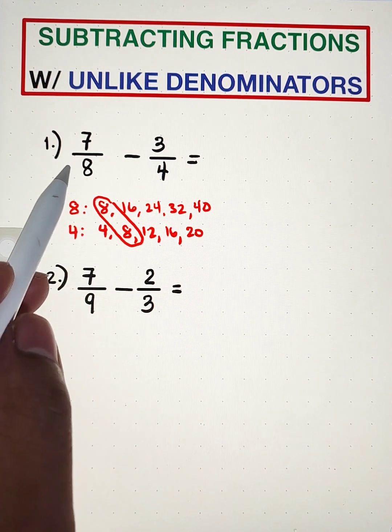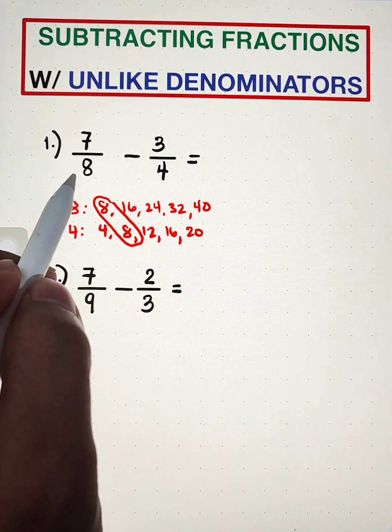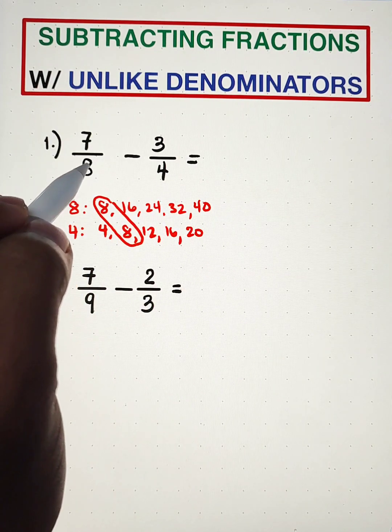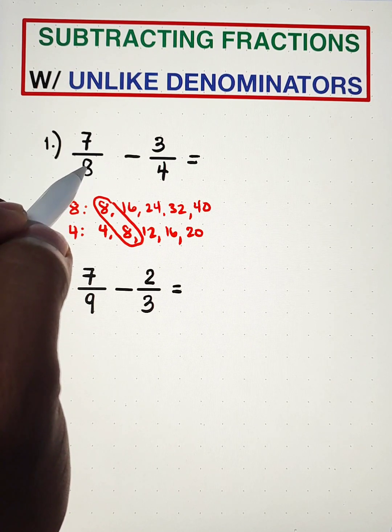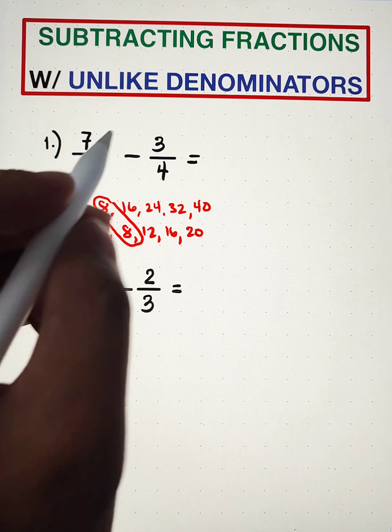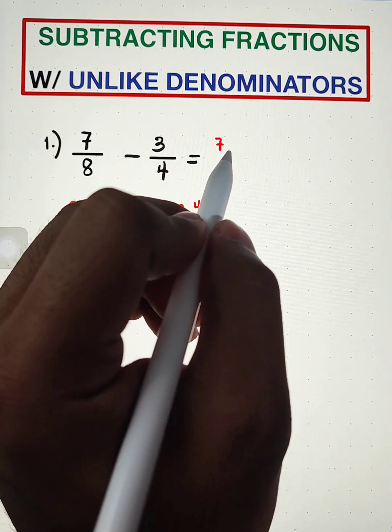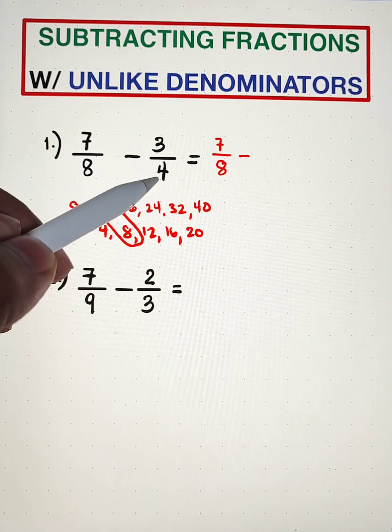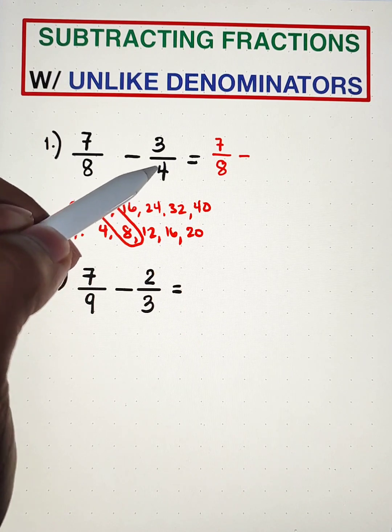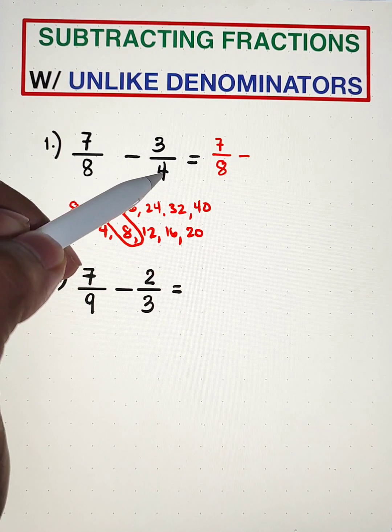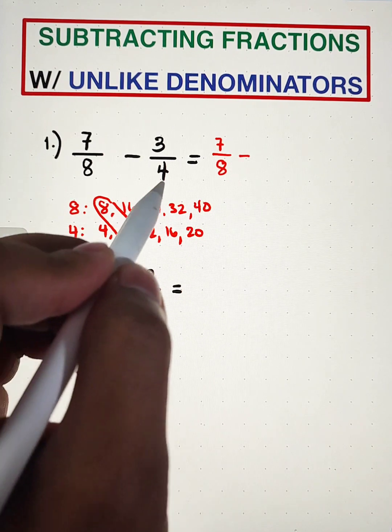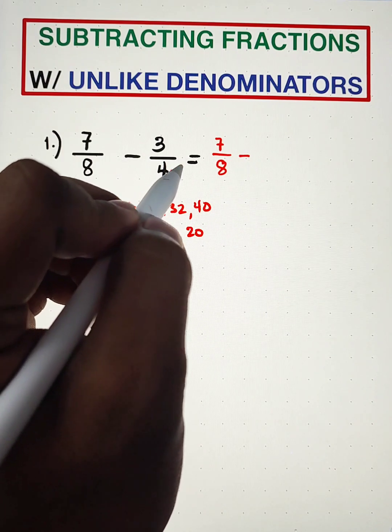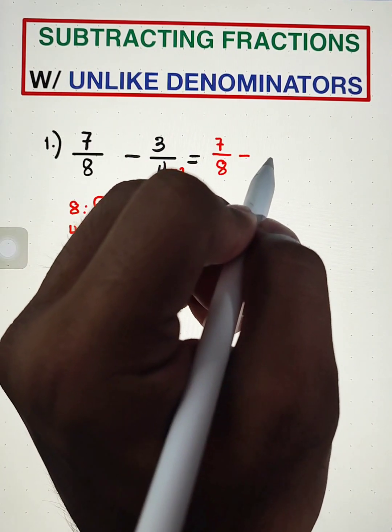So what we're going to do here now is we need to think how can we make 8 the common denominator. Since our first fraction is already 7 over 8, we'll just copy the 7 over 8. So that is 7 over 8 minus 3 over 4. We need to think what number do we need to multiply to make this denominator 8. So the number is 2. We need to multiply this by 2. So this will become 4 times 2, which is 8.